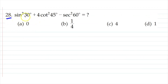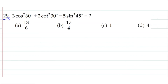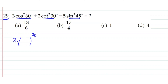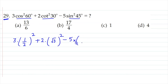Question 28: sin² 30° — I think you should try this yourself by substituting values and simplifying. Question 29: 3 cos² 60° + cot² 30° minus 5 sin² 45°. This is a practice question for you. Write cos 60° = 1/2 and square it, cot 30° = √3 and square it, sin 45° = 1/√2 and square it, then solve.